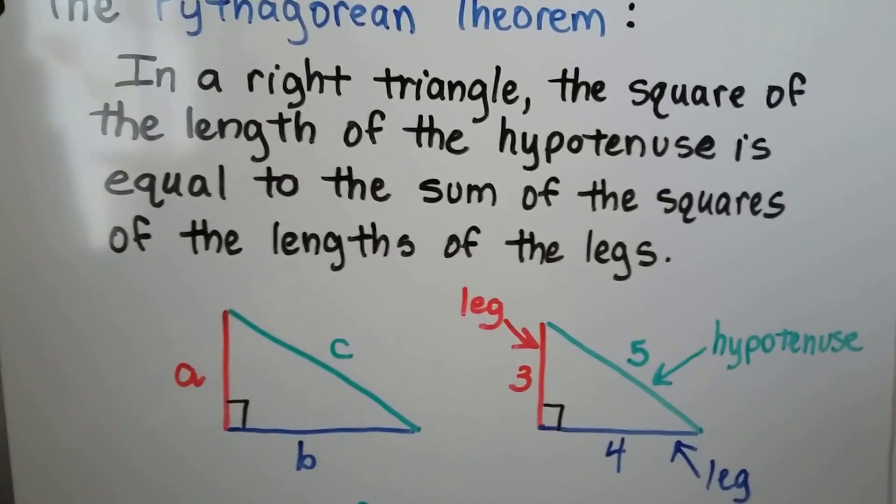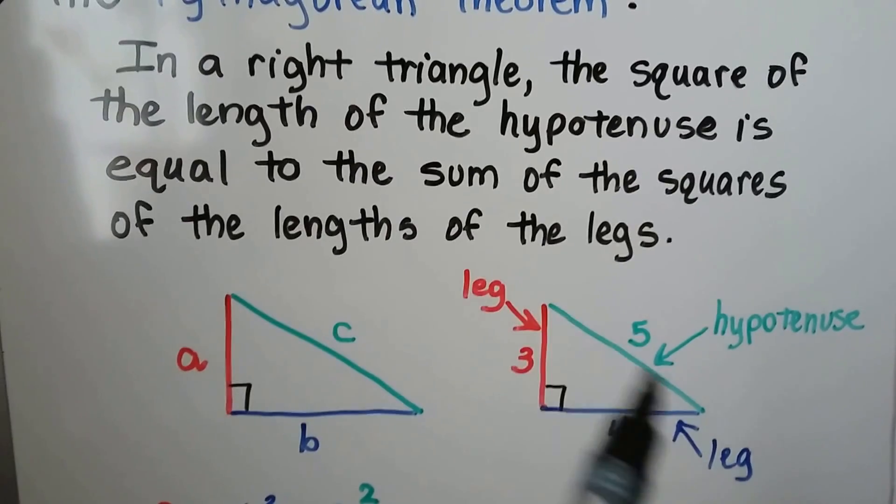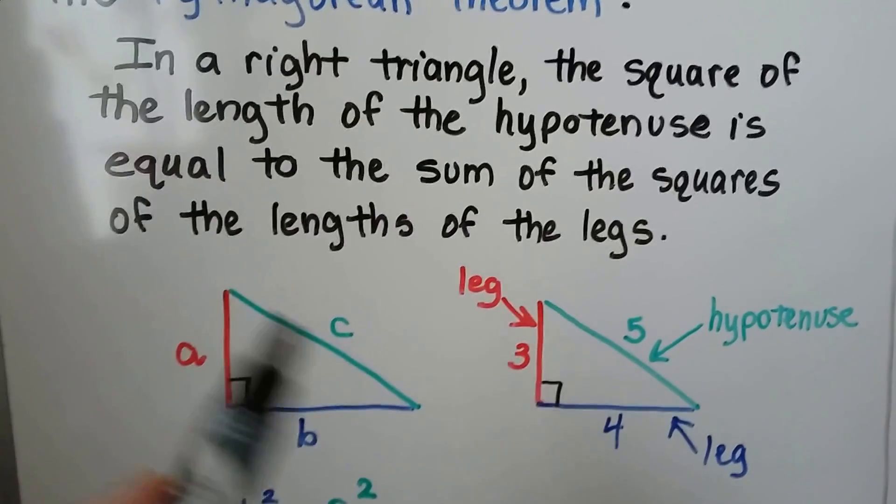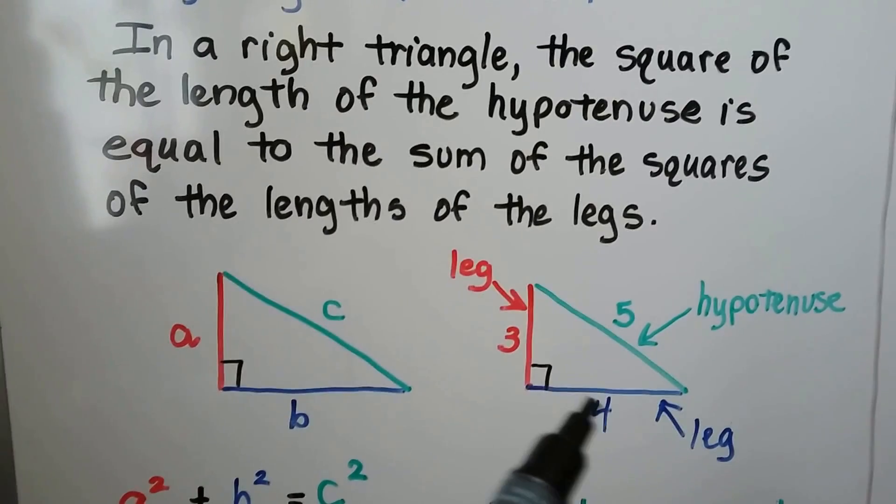Oh, what does that mean? Okay, well, the long side is the hypotenuse. That would be this side. And these are the legs, the short sides.